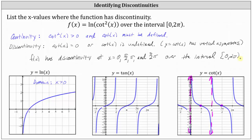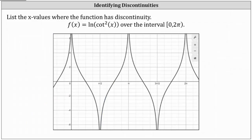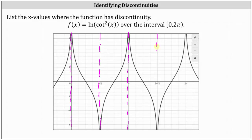Let's go ahead and check this by looking at the graph of the given function f of x. We could have started with this graph, but I think it's helpful to analytically determine where a function has discontinuity before jumping to the graph. So looking at the graph of the function, we do have discontinuity at x equals 0, x equals pi over 2 radians, x equals pi radians, and x equals 3 halves pi radians over the given interval.